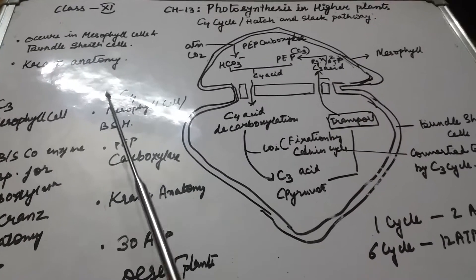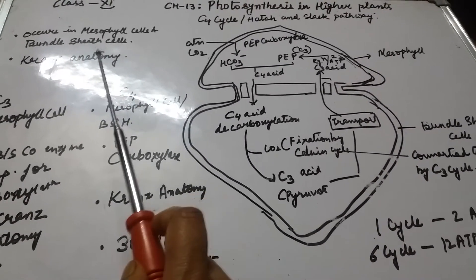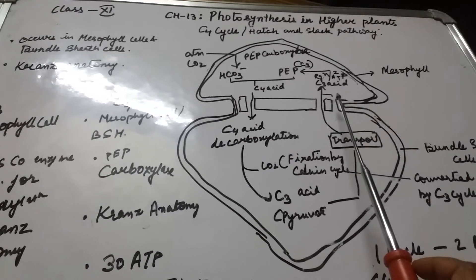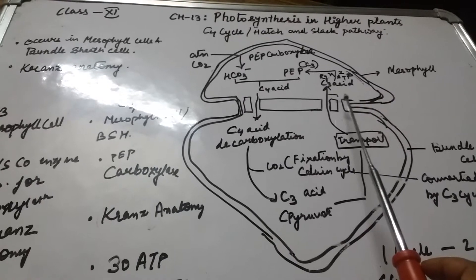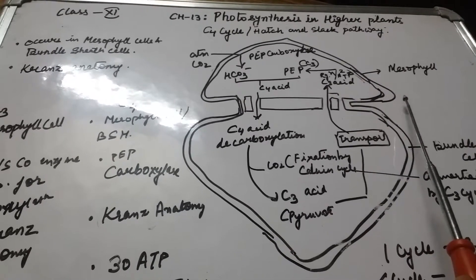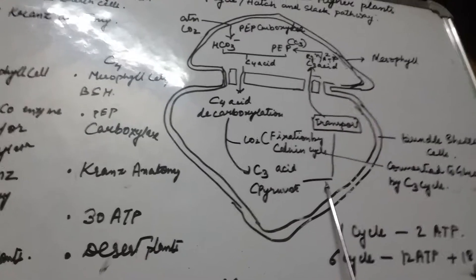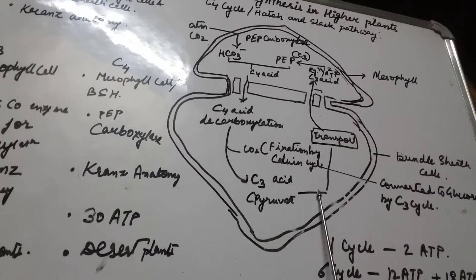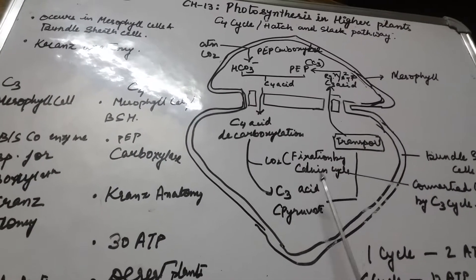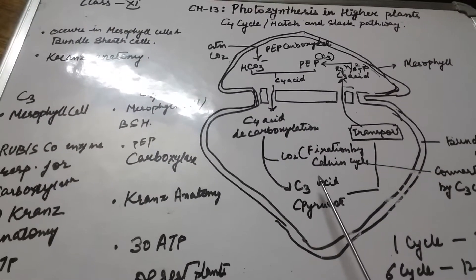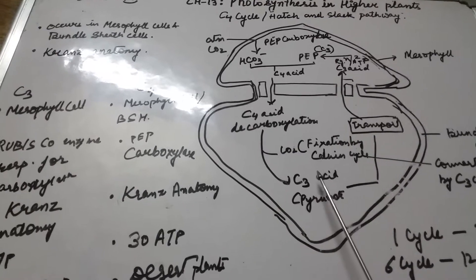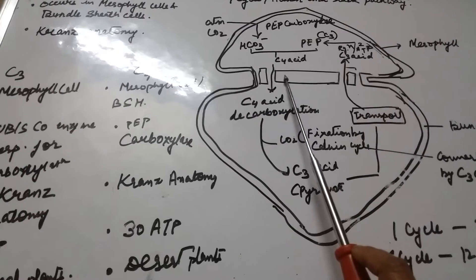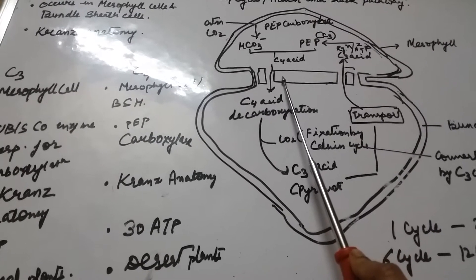This pathway occurs in mesophyll cells and bundle sheath cells. One part of the reaction occurs in the mesophyll cells of leaves and another part takes place in the bundle sheath cells. This pathway is called the C4 cycle because the first product formed after carboxylation is a C4 compound.